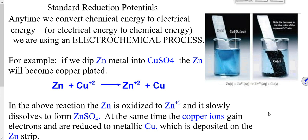Consider, for example, if we put a piece of zinc metal into some copper sulfate. We notice that the copper sulfate is blue because of the presence of copper²⁺ ions. So my reactants are zinc in its metallic form and copper²⁺ ions. Sulfate ions are also present but they are spectators. What we will see happen after some time is that the solution will turn a paler shade of blue.